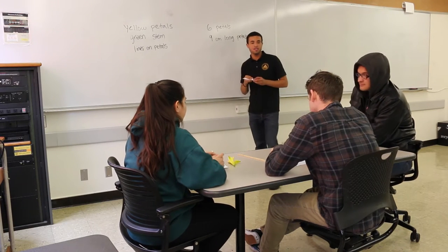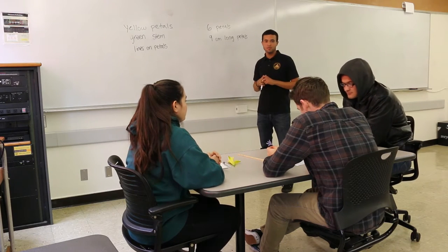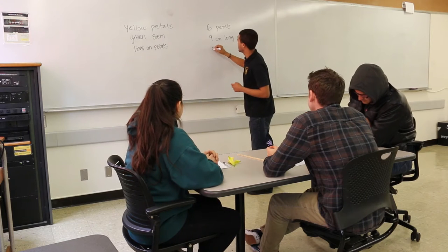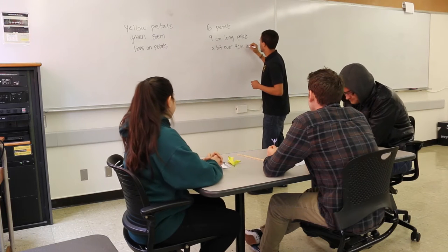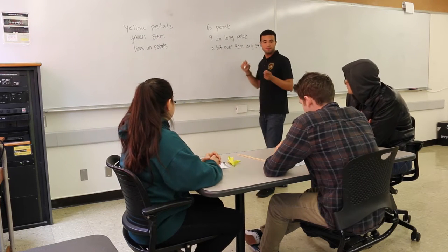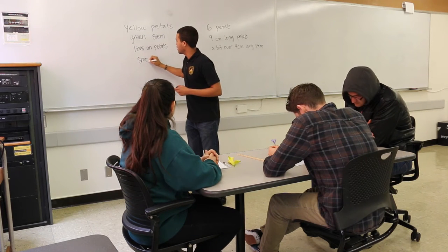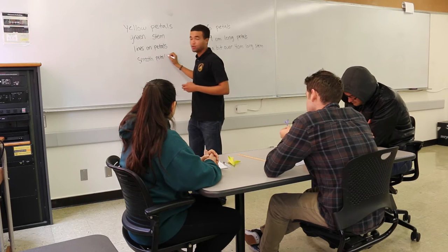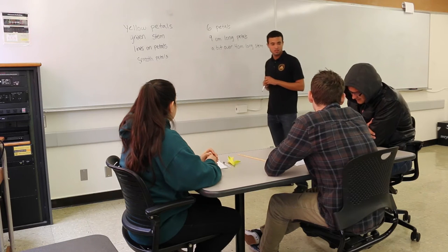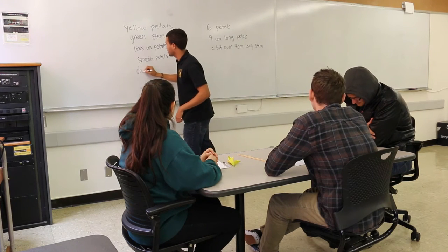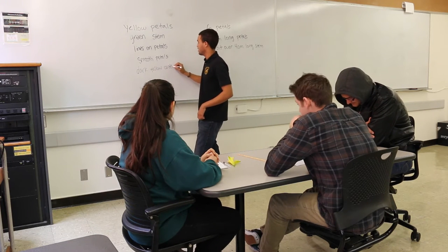Jared, do you have anything to add that Ariana didn't say? I talked about the stem — I think the stem is a bit over four centimeters long. I also talked about how the petals were smooth to touch. And Joe, do you have one other thing to add? I had a dark yellow center at the center of my flower. So your flower had a dark yellow center. And it had 13 petals.